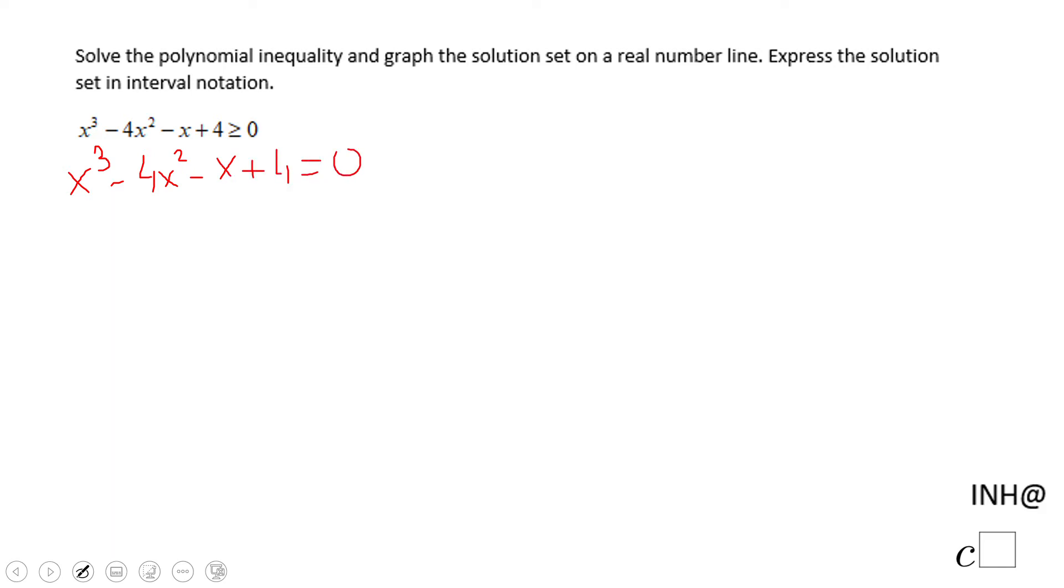For solving this polynomial equation we're going to use factoring by grouping. The first two terms have x² in common and then x - 4. For the second part, be sure you factor out a negative, you may want to put a 1, and then x - 4 here equals 0. And now if you notice we have a common factor of x - 4, and then we're going to write x² - 1 equals 0.